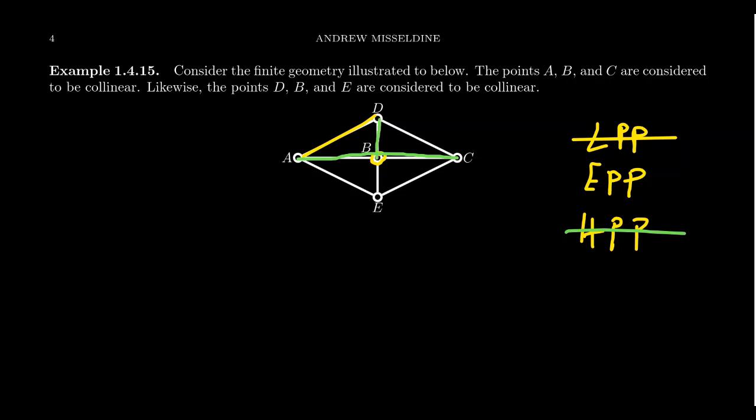And you have the line BED, which also intersects AD at the point D. So in this situation, there's no line parallel to the given line that passes through B. So this would then violate EPP.